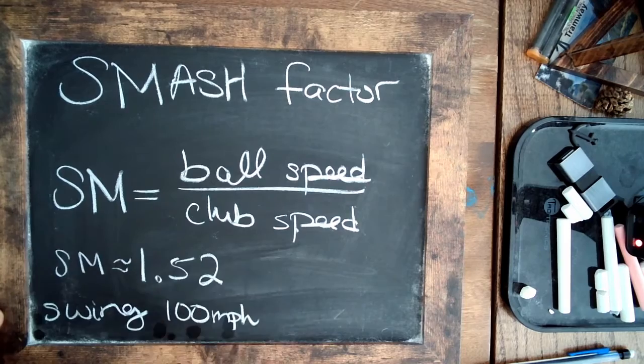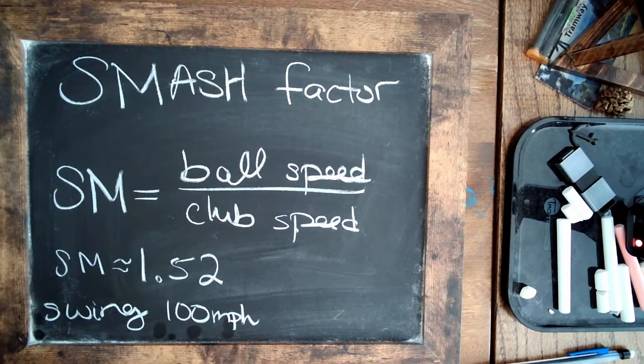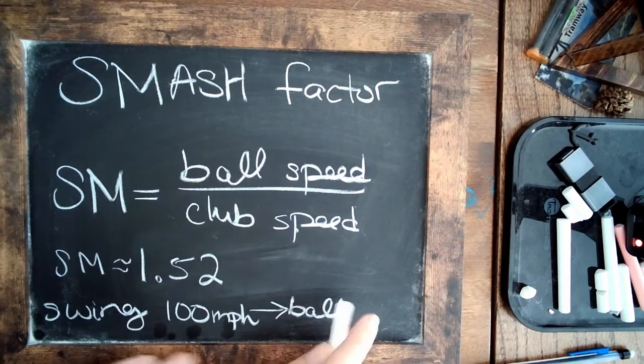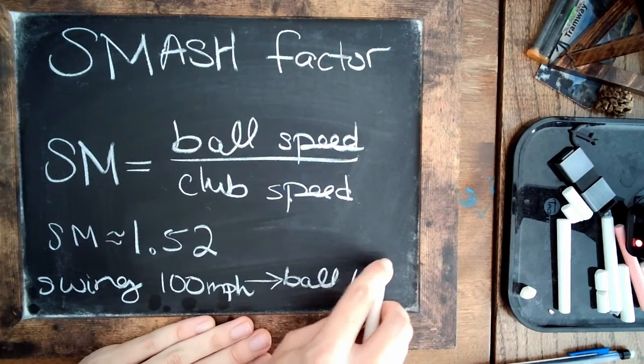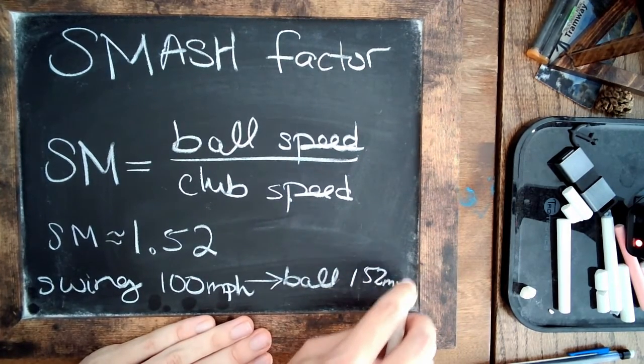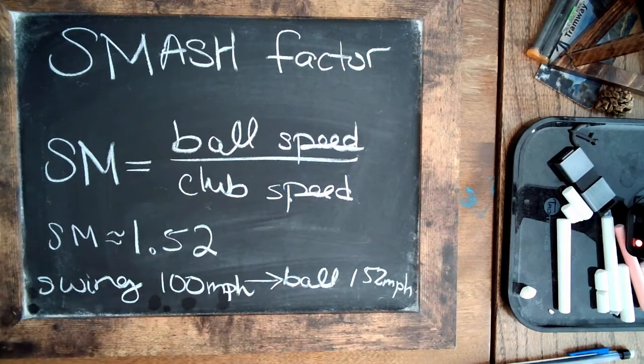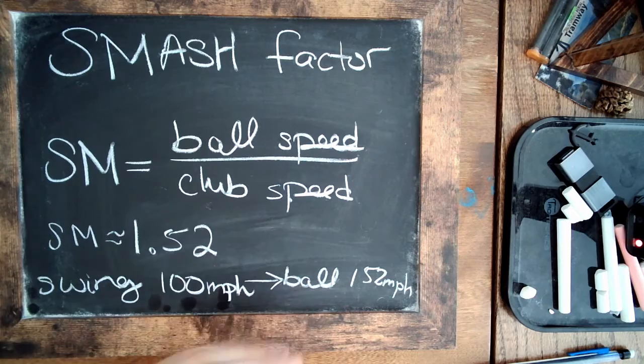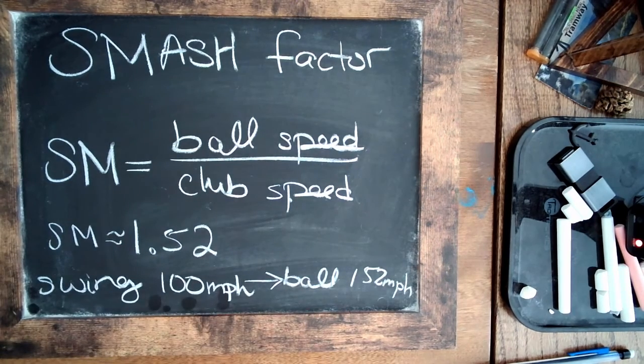which is reasonable for a driver, then the ball will travel at 152 miles per hour. So he's effectively launching the ball by a factor of 1.5 faster than what he's swinging.